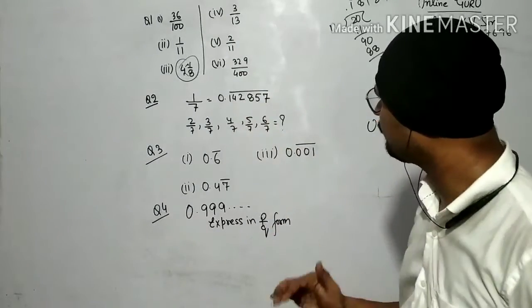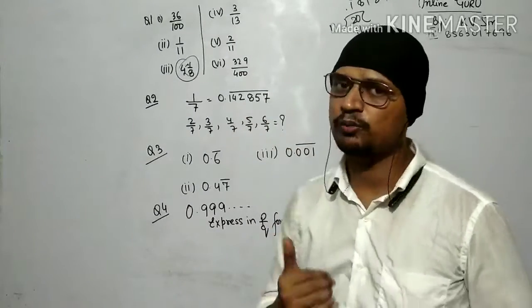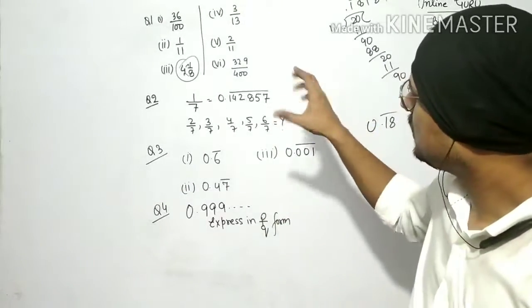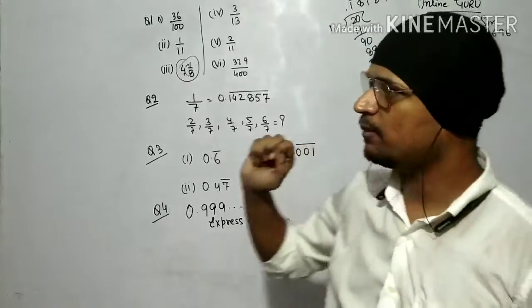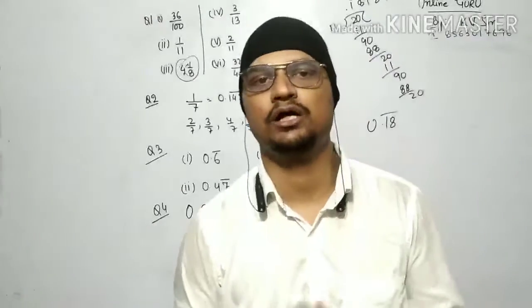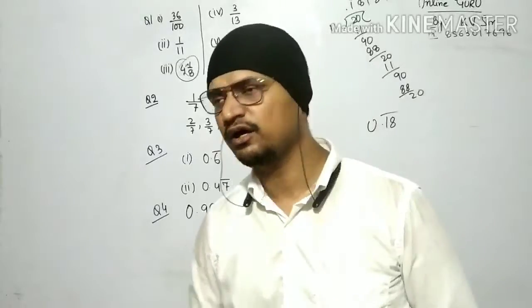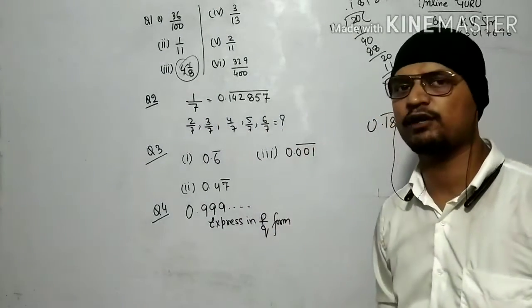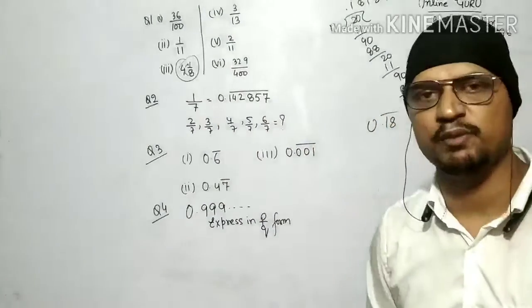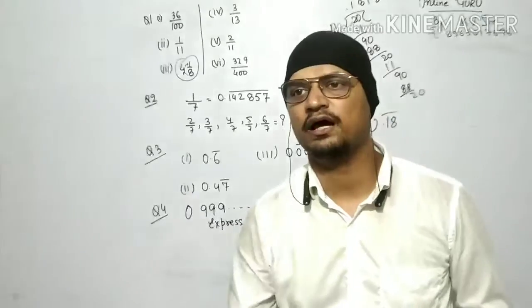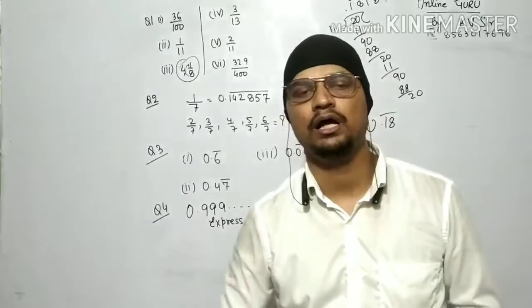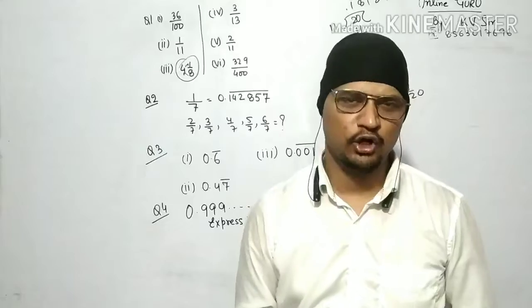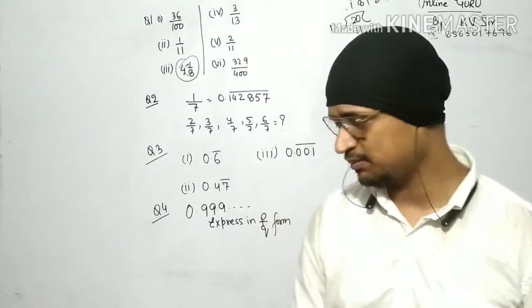The last one is 329 upon 400. We solve it the same way. The conclusion from this question is: whichever fraction terminates or doesn't — you would have studied in division that if it ends then it is terminating, and if it does not end then it is non-terminating.